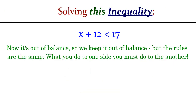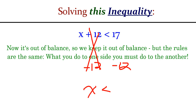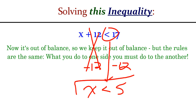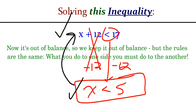For x plus 12 less than 17, we subtract 12 from both sides — the inverse operation. That gives 17 minus 12 equals 5, and the inequality sign is preserved: x is less than 5. This tells us every value of x that, when added to 12, gives a result less than 17. Following the same rules as equations ensures our solution inequality truly captures all values of x that make the original inequality true.